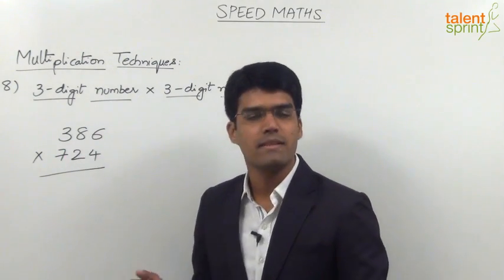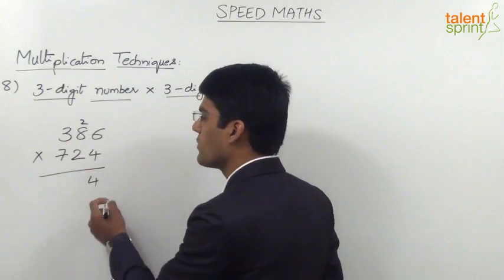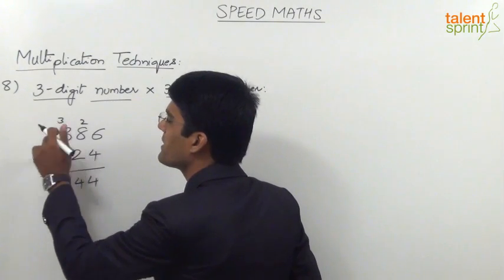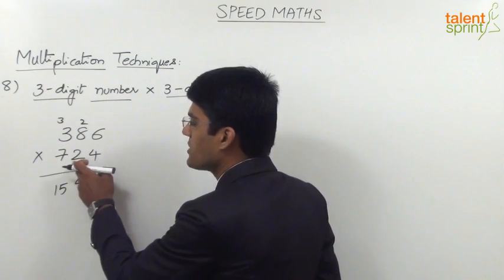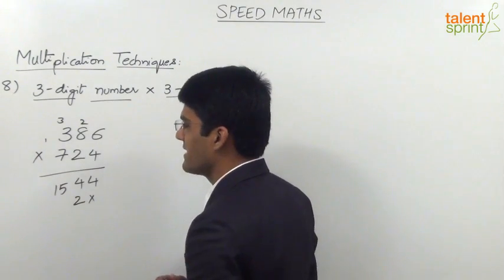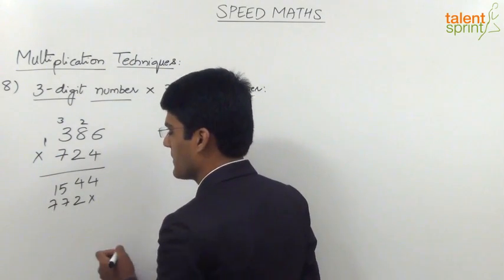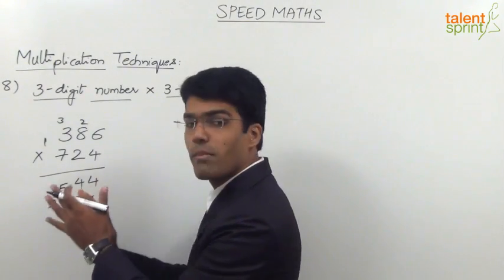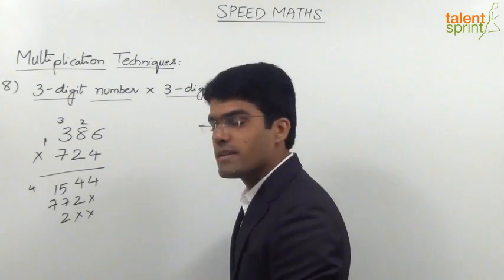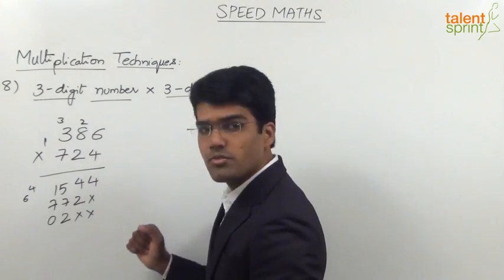For example, let's say we have to multiply 386 with 724. In the regular procedure: 4 into 6 is 24, so 2 gets carried forward; 4 into 8 is 32 and 2 is 34, so 4 in the answer and 3 gets carried forward; 4 into 3 is 12, 12 plus 3 is 15. Then we put a mark and proceed with 2: 2 into 6 is 12, 2 into 8 is 16 plus 1 is 17, 2 into 3 is 6 plus 1 is 7. Then with two marks displacement: 7 into 6 is 42, 7 into 8 is 56 plus 4 is 60, 7 into 3 is 21.